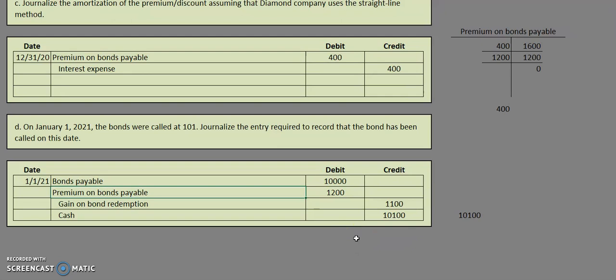That covers bonds payable journalizing. It's really not too complicated, but bonds have a plethora of different scenarios you might run into. All it really takes is practice — remember your amortization, how long the bond is, and the difference between a coupon rate and an effective rate, because your problem might give you an effective rate. Keep practicing, and I'll keep making more videos so you can get more examples.